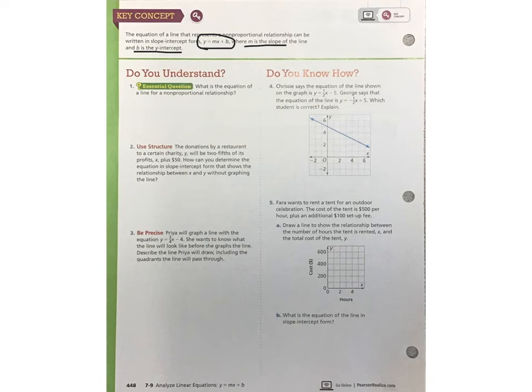Now, let's try some problems together. Remember, the equation of a line that represents a non-proportional relationship can be written in slope-intercept form, y equals mx plus b, where m is the slope of the line and b is the y-intercept.